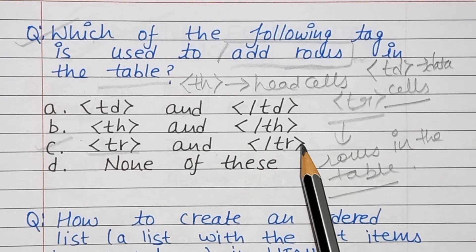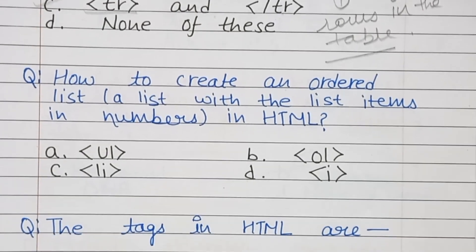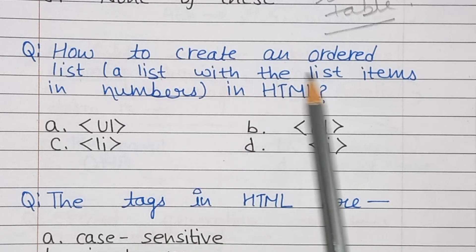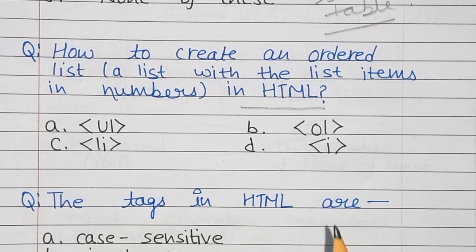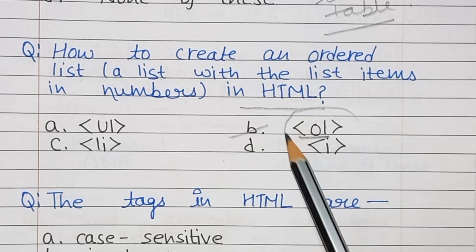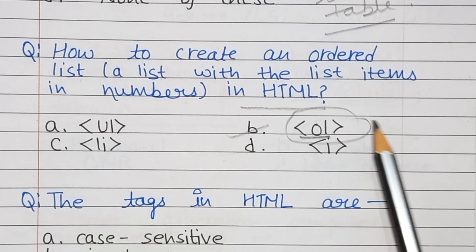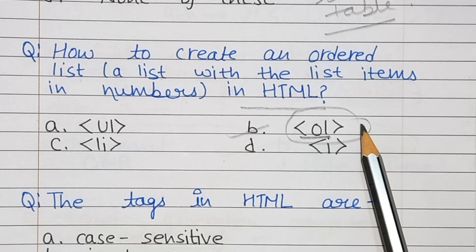Next question: How to create an ordered list — a list with items in numbers — in HTML? The answer is option B — the OL tag. The ordered list is used to display list items in a specific order when items need to be shown in a particular sequence.